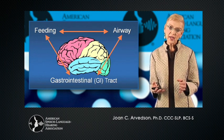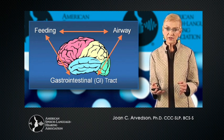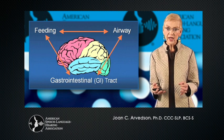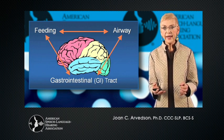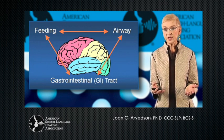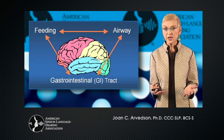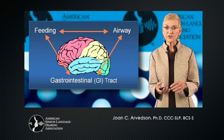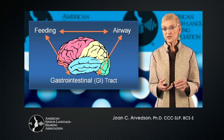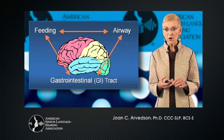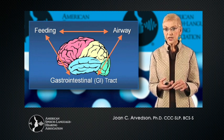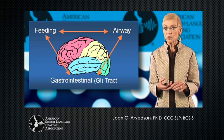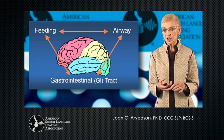And then we've got airway. Everyone must have a stable airway in order to feed orally. And then, of course, the gastrointestinal tract. So many of the children with reflux and irritability in the esophagus and all sorts of GI tract issues are going to create complicating factors for what we can do in direct management for the feeding issues.